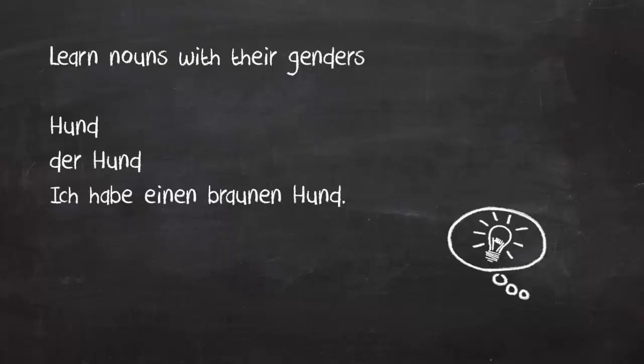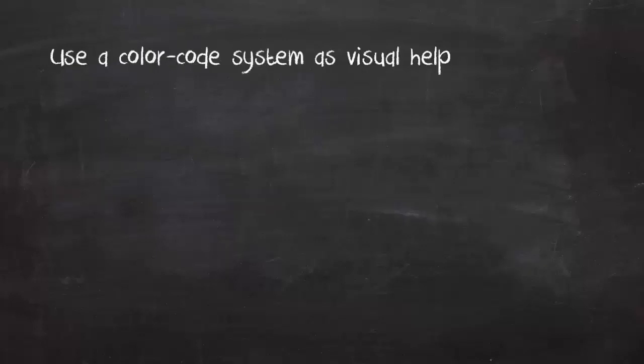The second tip is: when you learn a new word, it's best to use as many senses as possible. Don't just read the word, but also pronounce it, write it, and hear it. The more senses you use, the better your brain will retain the information. And if you use a color code system, it will make it even easier for your brain to memorize the gender.